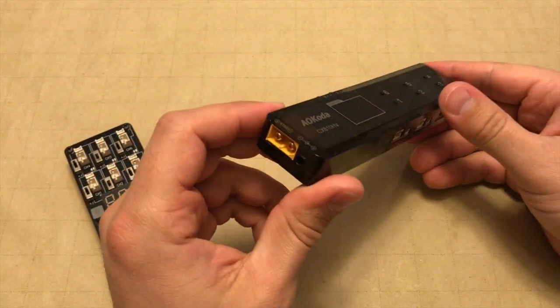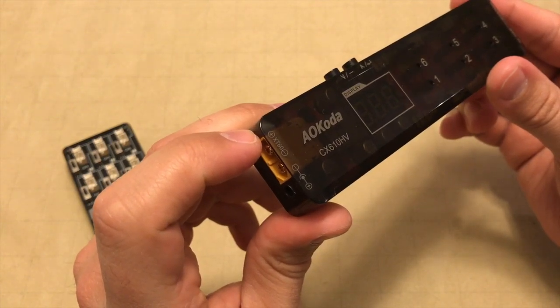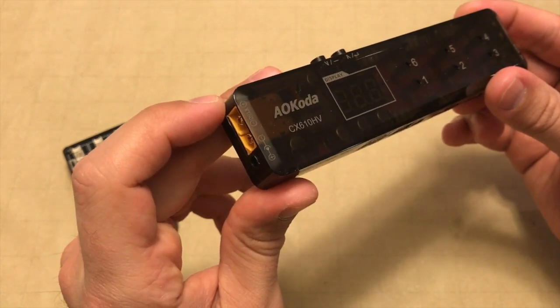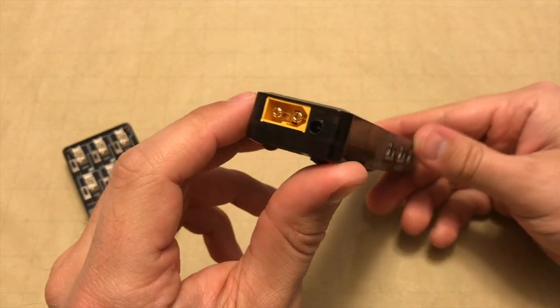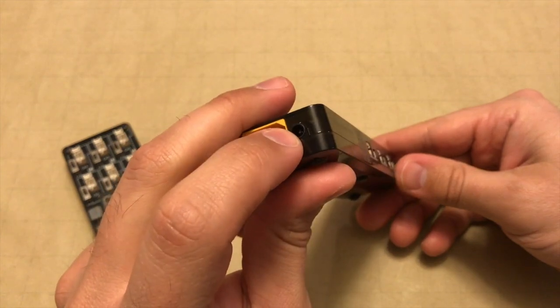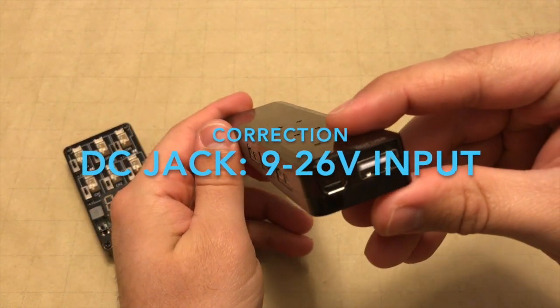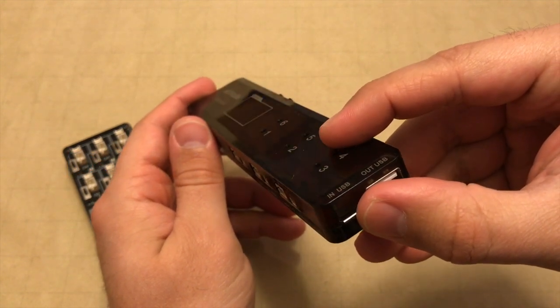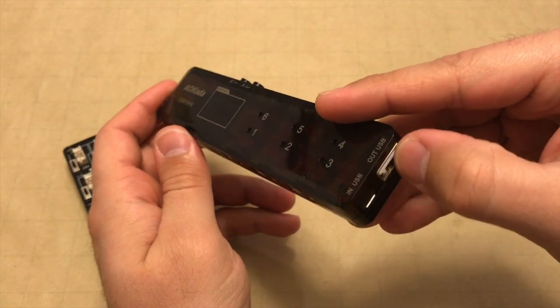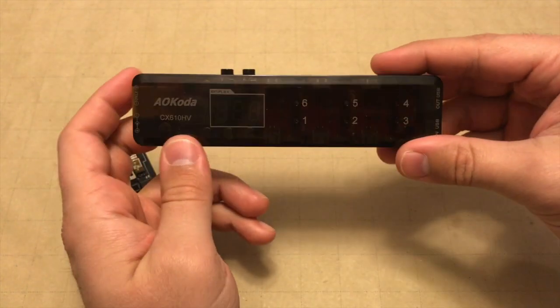But as far as the functionality, the inputs available are the XT60 connector, which can take a 2S through 6S battery. There is a 3.5 mm DC connection here that takes a 12 volt input, and also a micro USB input, which would be 5 volts, and then it has an output here for a USB that would also be 5 volts.